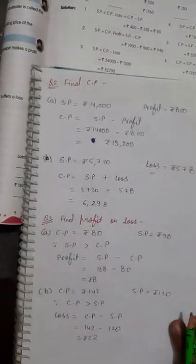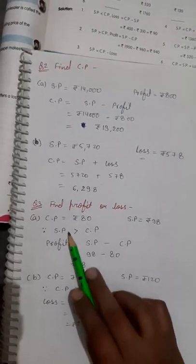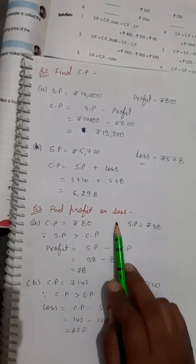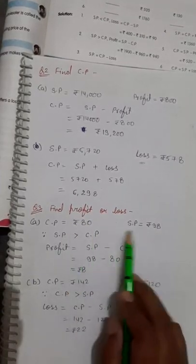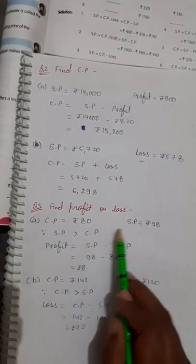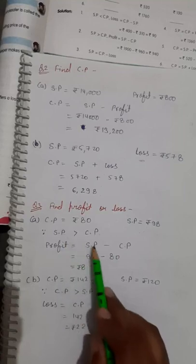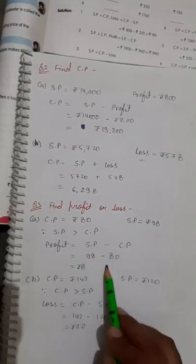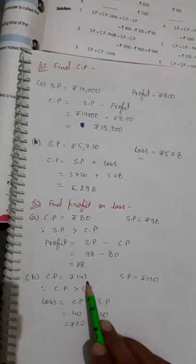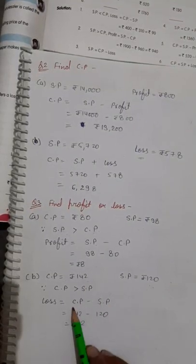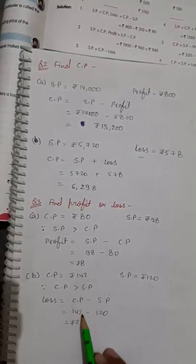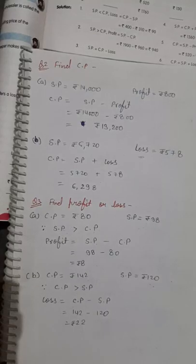Question number three: Find the profit or loss. As you know, if SP is greater there is a profit, and if CP is greater there is a loss. Here, CP and SP are both given. SP is greater, so there is profit — subtract CP from SP and you get 8 rupees. In the second case, CP is greater than SP, so there is a loss. Using the loss formula CP minus SP, put in the values and you get a loss of 22 rupees.